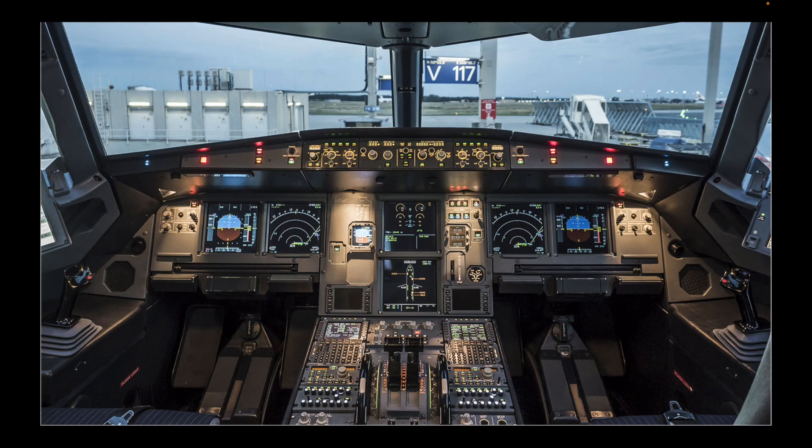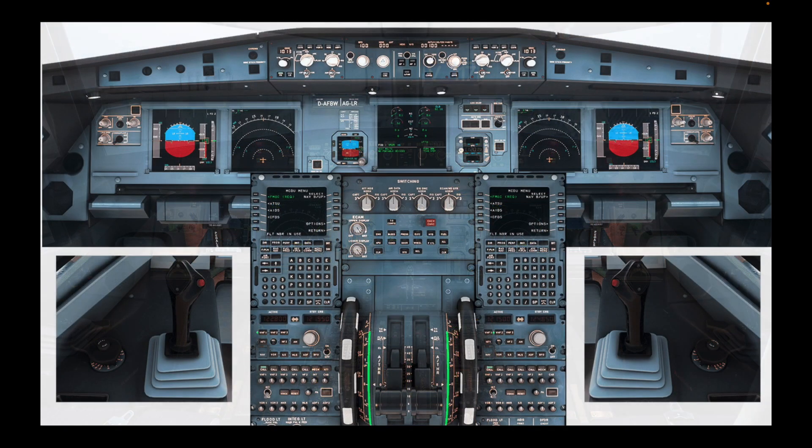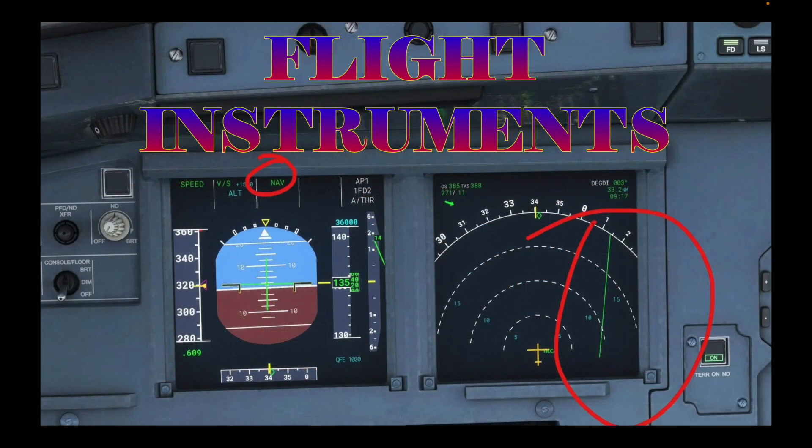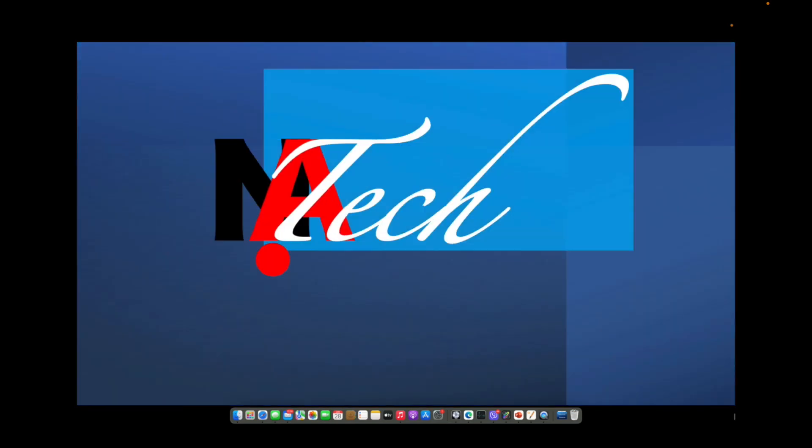Have you ever wondered how pilots maneuver the airplane while it is flying high in the sky? They look at certain panels on the cockpit called flight instruments. Basically, there are six of them to monitor regularly. In this video, we will be discussing the six flight instruments that are being used in flying an airplane.